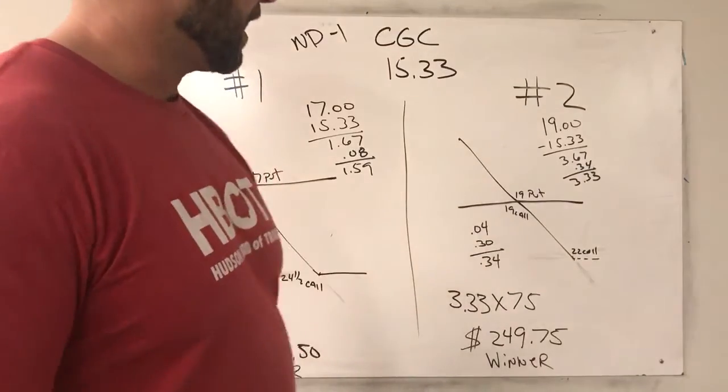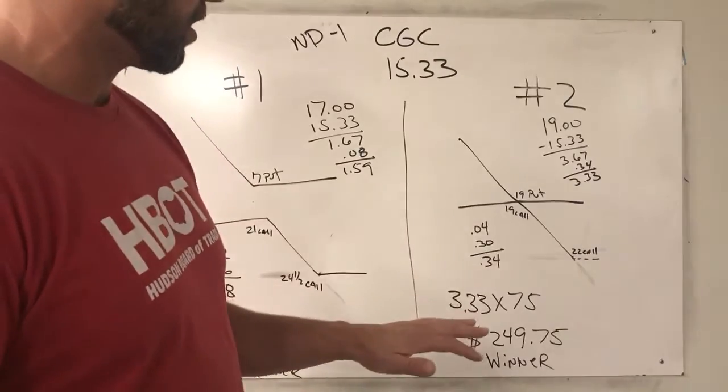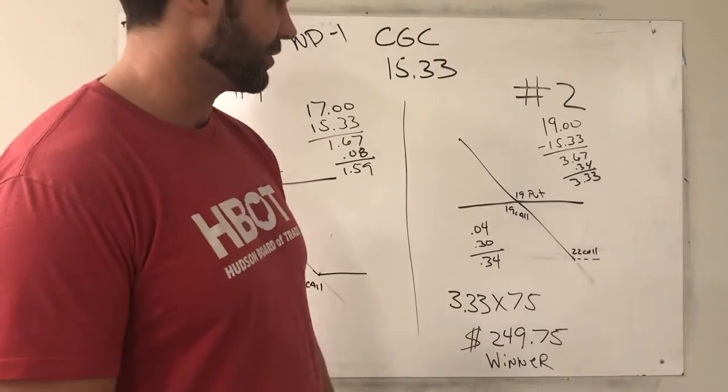Then a second choice, we did the synthetic short on the 19 line. So we bought the put and we sold the call. We were able to do that for like a three cent credit.